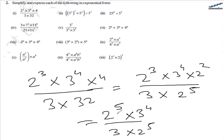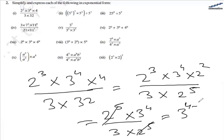Now in both numerator and denominator we have 2 raised to the power 5, so these cancel out. We are left with 3 raised to the 4 in the numerator and 3 in the denominator. Since the base is the same, we subtract the powers: 3 raised to the power 4 minus 1, which is 3 raised to the power of 3. So 3 raised to the power of 3 is the answer.